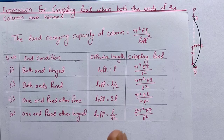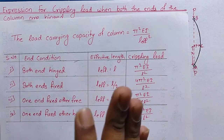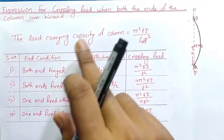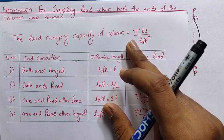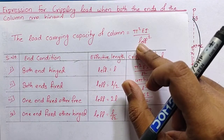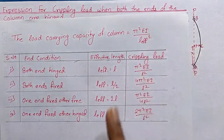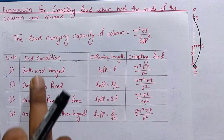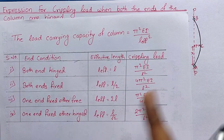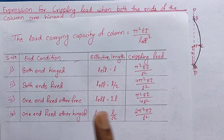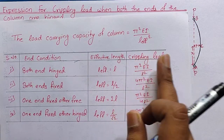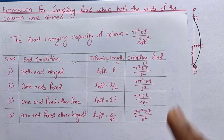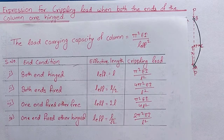There are four types of end condition for the long column. The general expression for the crippling load or the load carrying capacity of the column is given by π²EI upon L_effective². The value of L_effective depends upon the end condition, and due to that the expression for crippling load varies for each end condition.